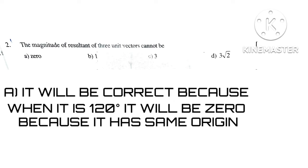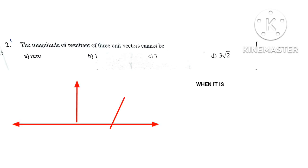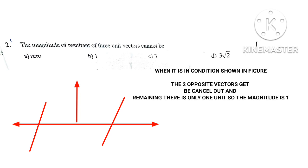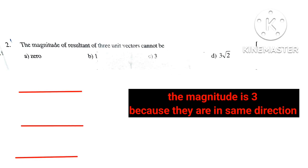Next, in this condition, the magnitude is 1 because two opposite vectors can be cancelled out, and the remaining one vector has magnitude 1. When the vectors are in the same direction, the magnitude is 3.